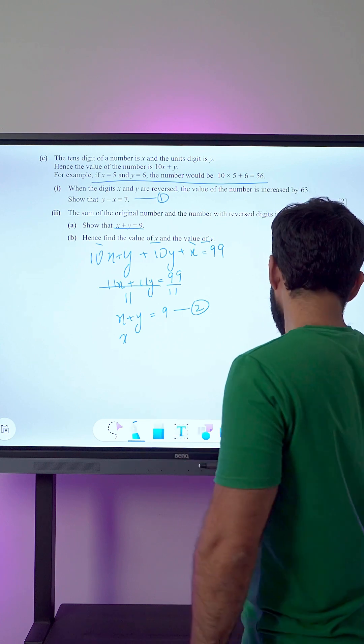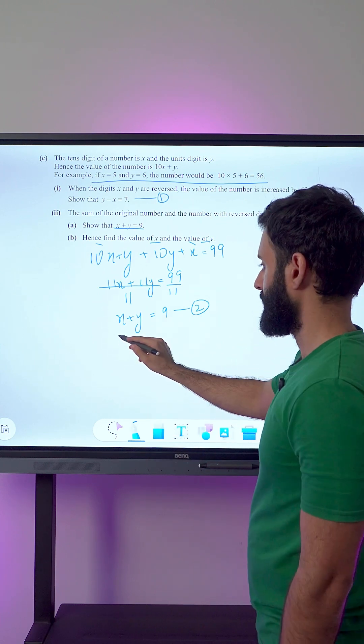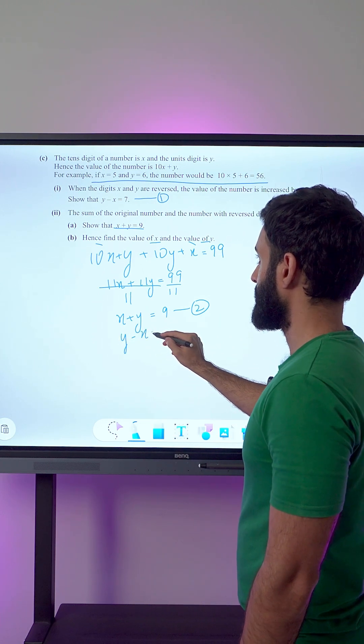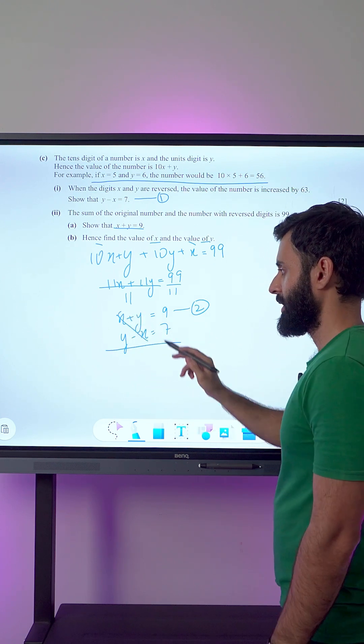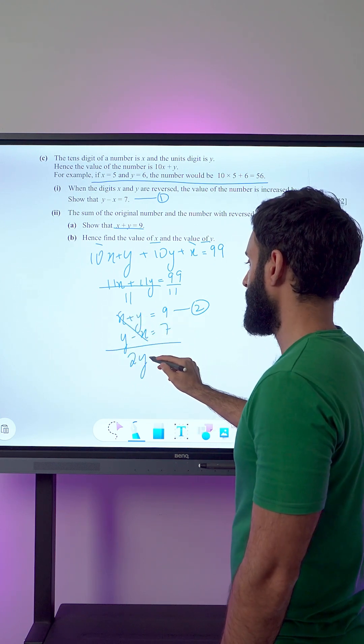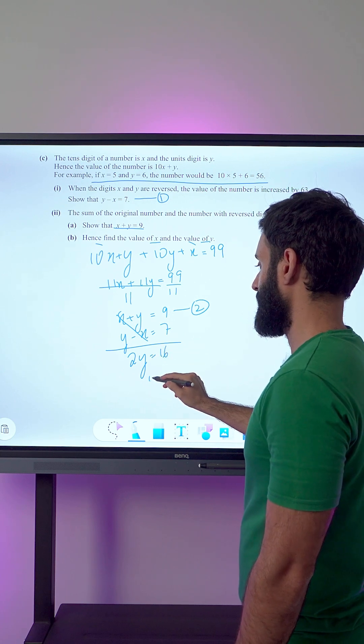We already have the second equation. Let's write the first equation under it: y minus x equals 7. When I add the two equations, x gets eliminated. Y plus y is 2y, 9 plus 7 is 16.